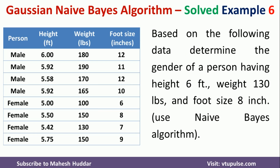In this case, we have been given 8 examples — 4 are of type male and 4 are of type female. Height, weight, and foot size are the features of this particular dataset. Given this dataset, we have to classify a new person whose height is 6 feet, weight is 130, and foot size is 8 inches into either male or female.